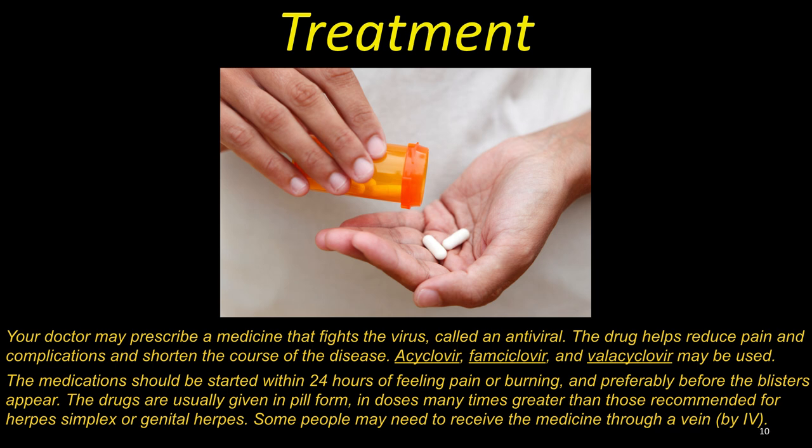Treatment. Your doctor may prescribe a medicine that fights the virus, called an antiviral. The drug helps reduce the pain and complications and shorten the course of the disease. Acyclovir, famciclovir or valacyclovir may be used. The medication should be started within 24 hours of feeling the pain or burning and preferably before the blisters appear. The drugs are usually given in pill form and in doses many times greater than those recommended for herpes simplex or genital herpes. Some people may need to receive the medicine through a vein.